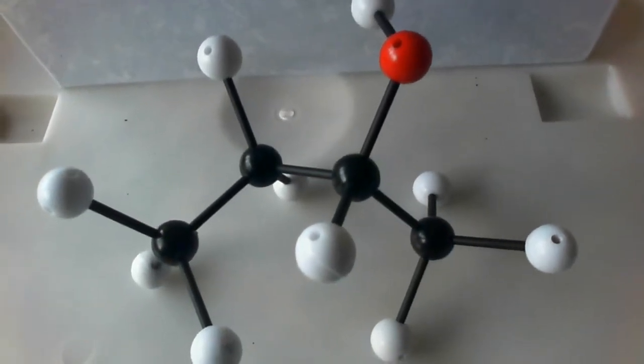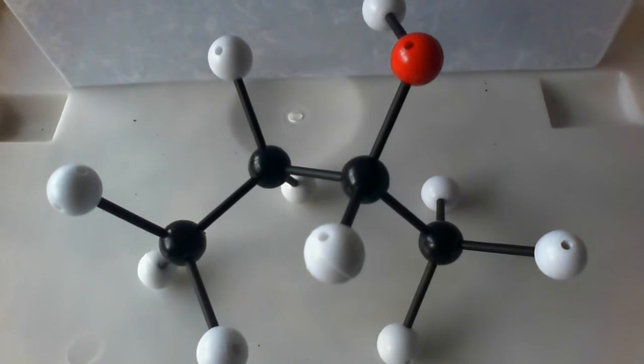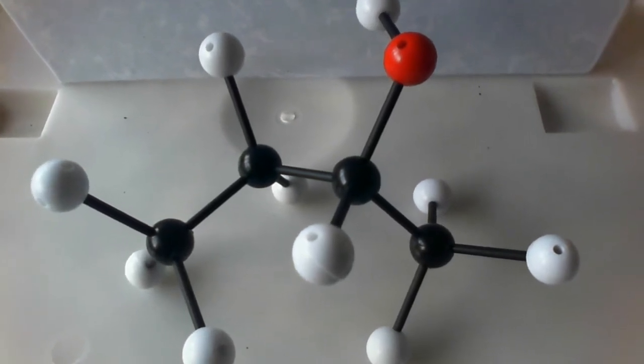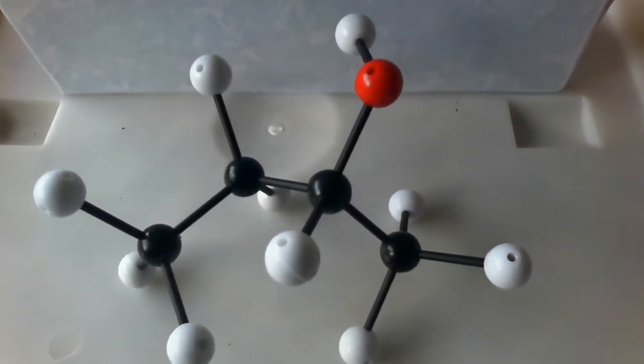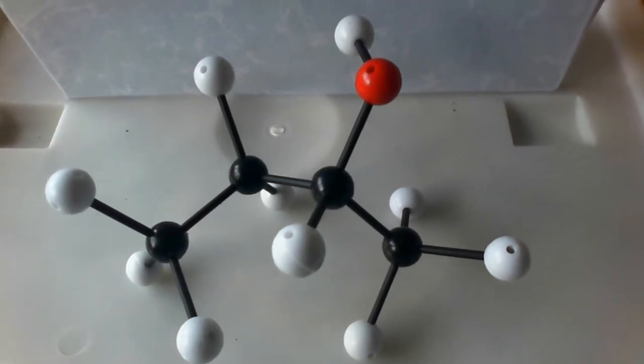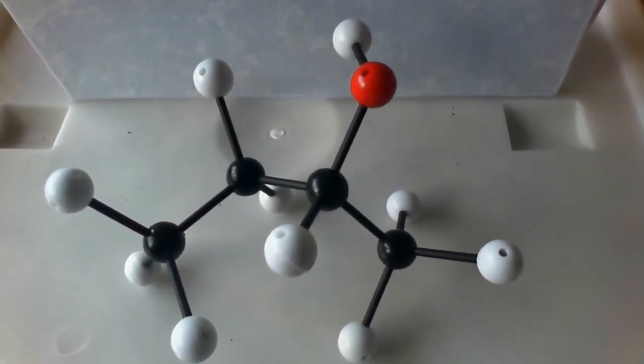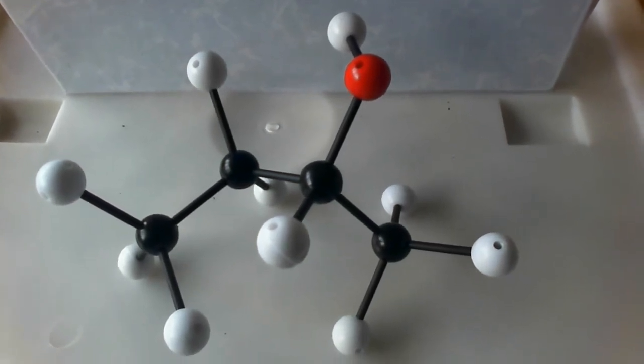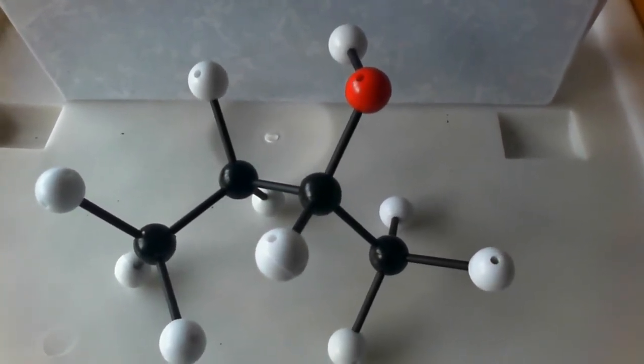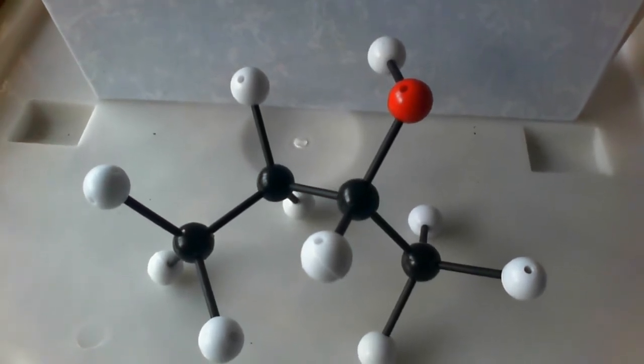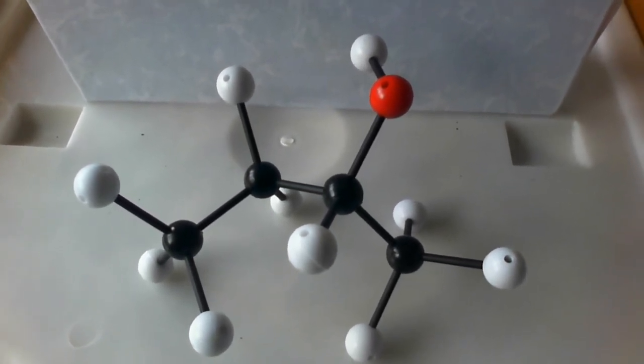These are called optical isomers. They have some really important uses in nature. Nature tends to only choose one particular one. This is true for things like sugars, amino acids, which you use to make proteins, and so on. They're quite an important thing when it comes to biochemistry, which is, of course, one of the big branches of organic chemistry.